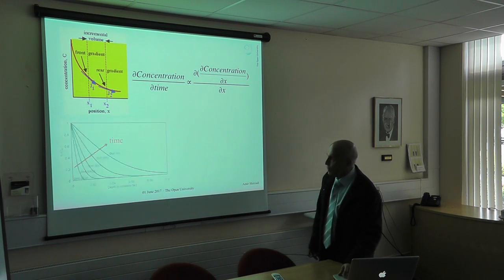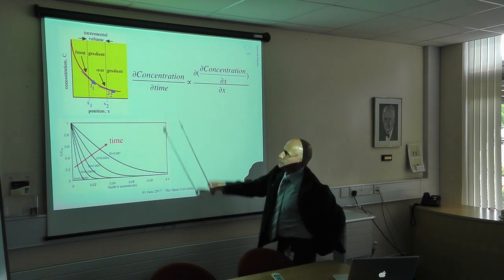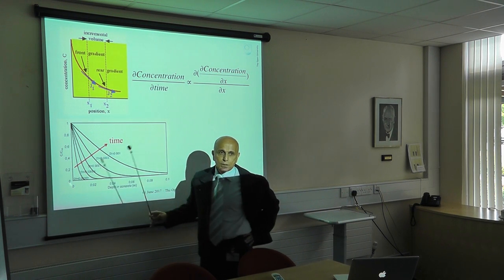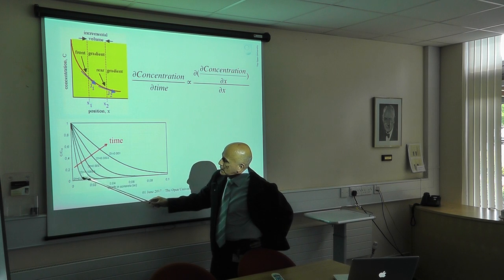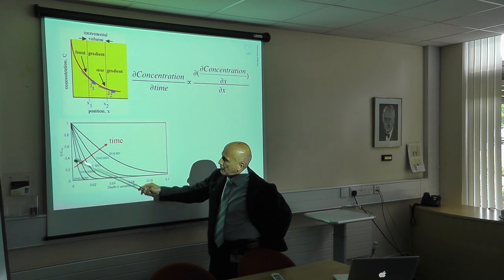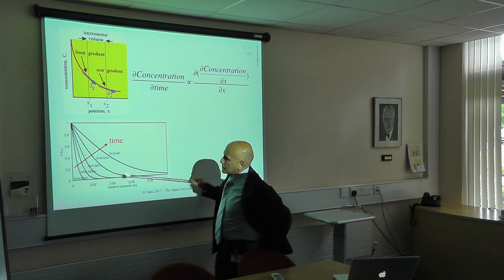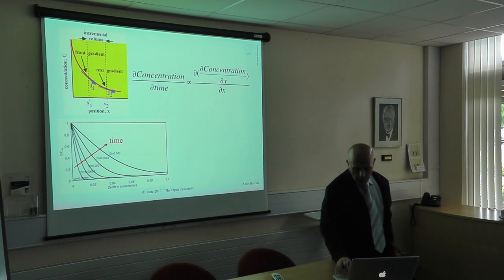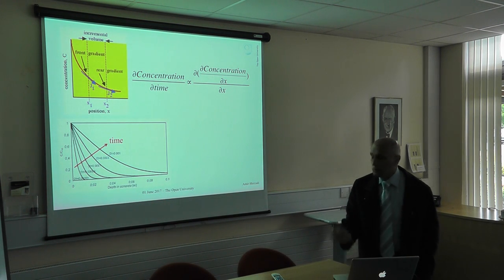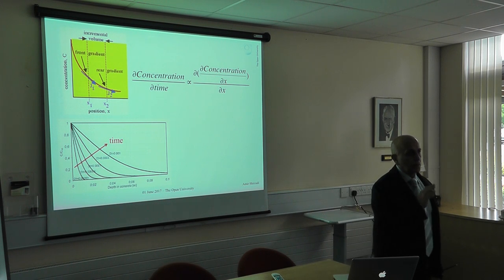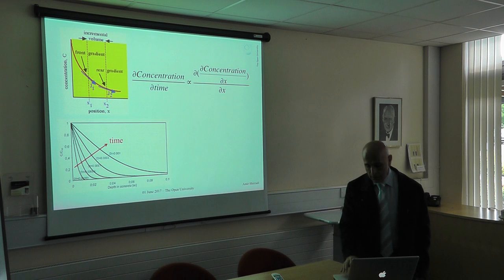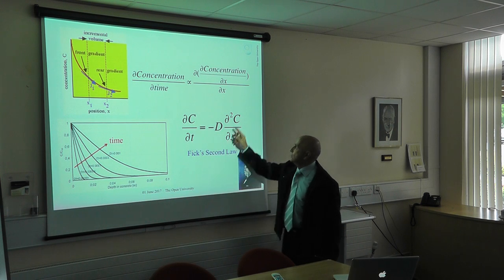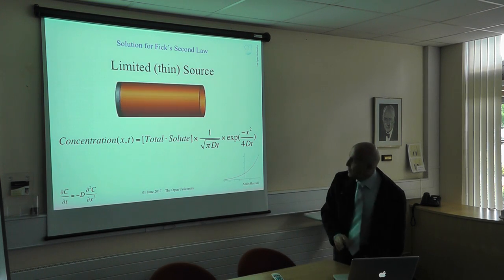That defines Fick's second law. Obviously here we have an element of time. Remember, if this were a straight line, the second derivative would be zero, so the change in concentration would be zero. At the initial stage you have very low concentration at this point X. As time passes, this curve starts to spread out. We're just looking at the rate of change — the concentration at time t depends on the second derivative with respect to X.